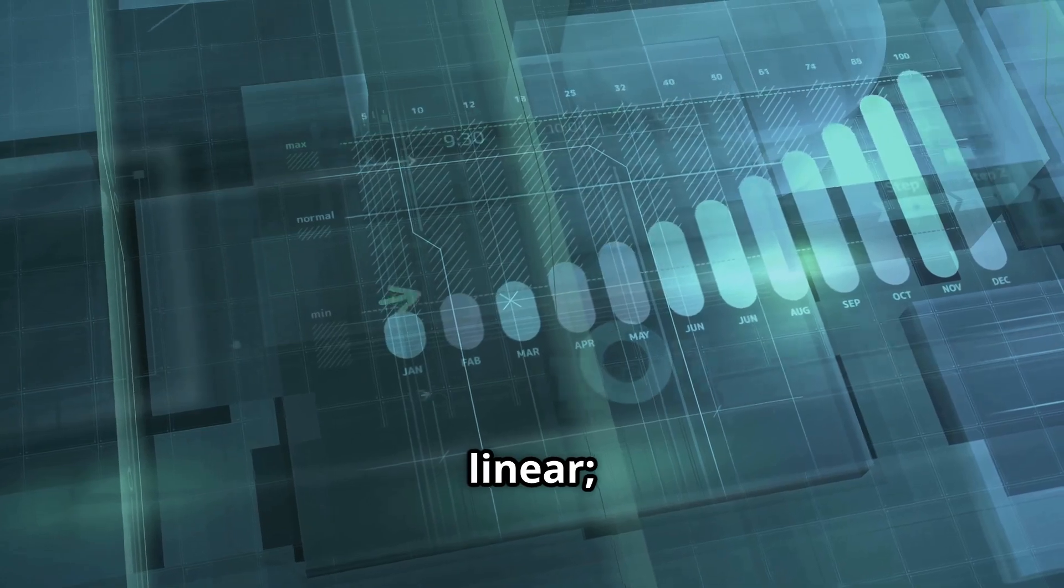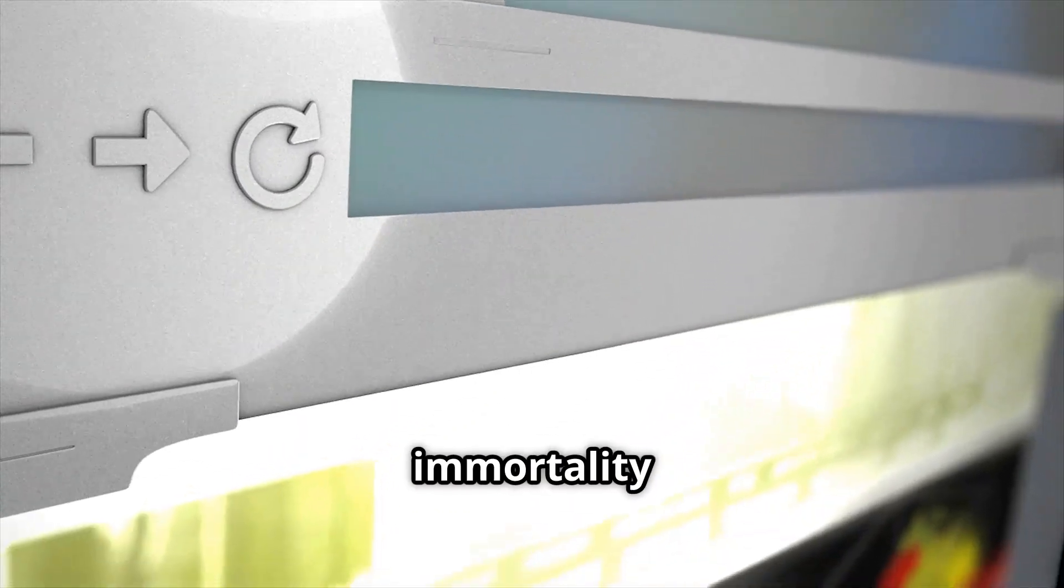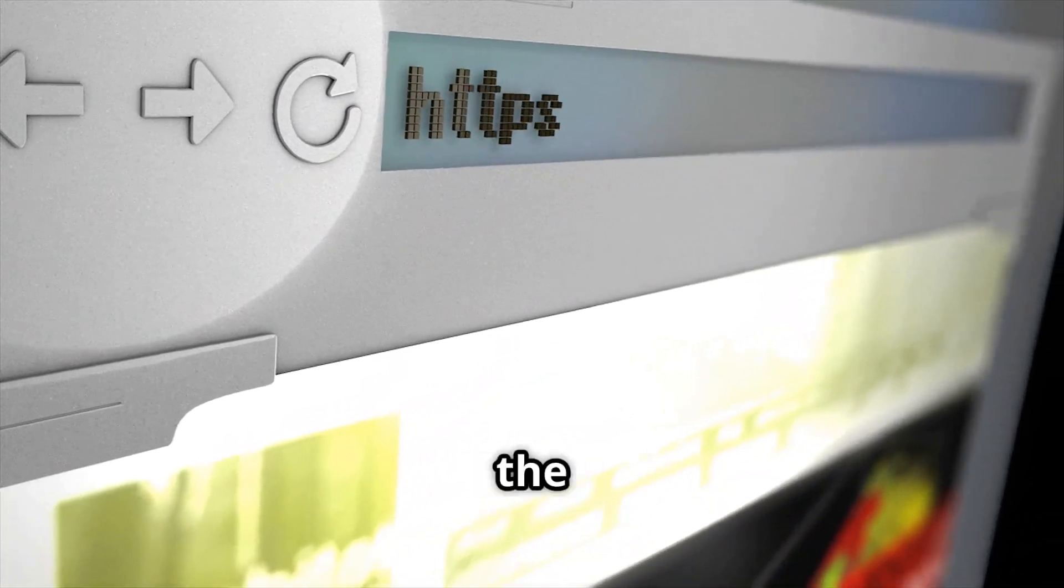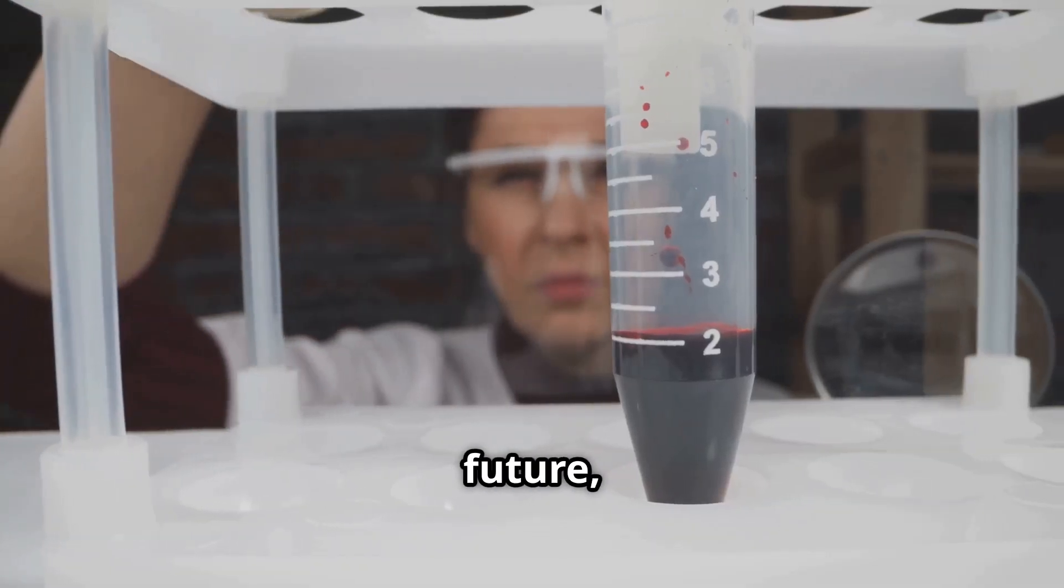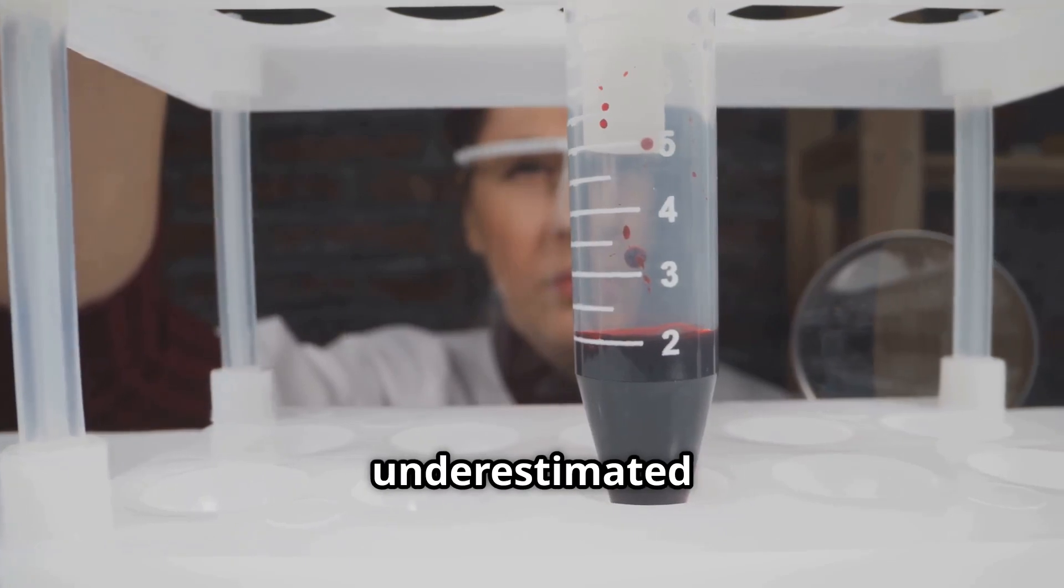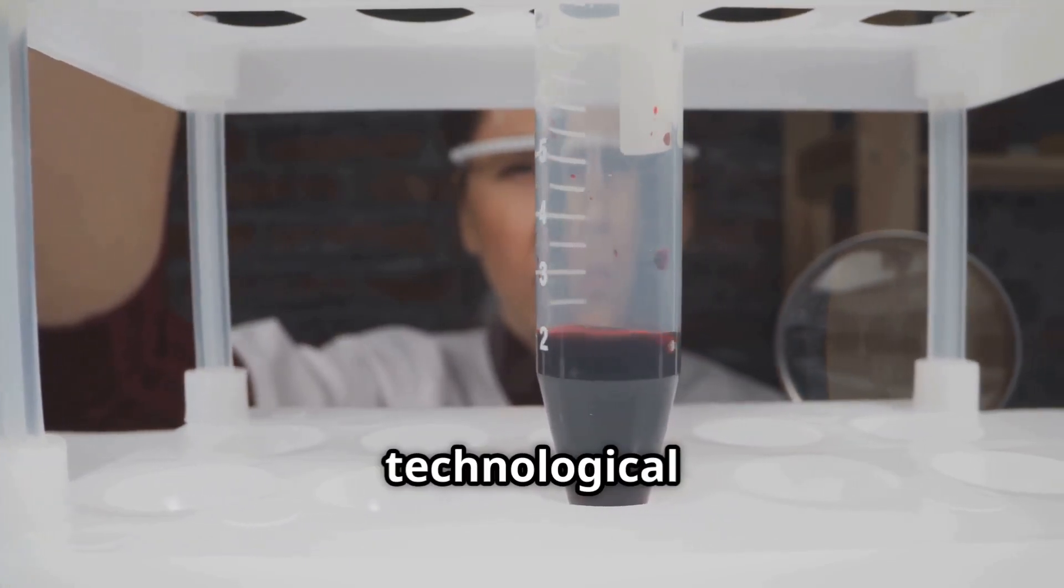The progress is not linear—it is exponential. To dismiss the possibility of immortality by 2030 is to look at the progress of the past and use it as a linear guide for the future, a mistake that has historically underestimated the true trajectory of technological change.